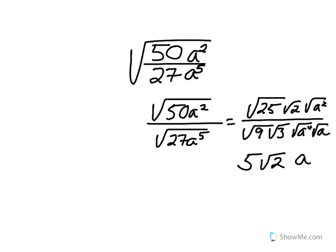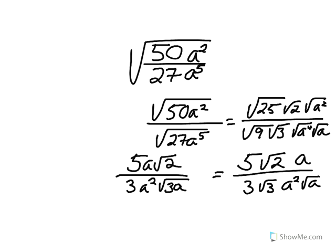Reducing further, in the numerator we get 5 times root 2 times a. In the denominator, we get 3 root 3 times a² times root a. Cleaning up the order, we get 5a root 2 divided by 3a² square root 3a.